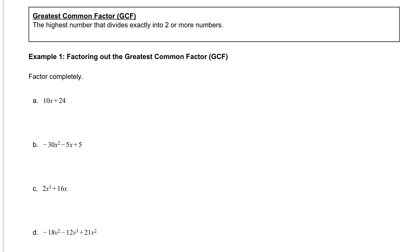In today's notes we're going to look at the start of factoring, and what we're going to start with is factoring a greatest common factor. A greatest common factor is the highest number that divides exactly into two or more numbers. So what we're going to do here is we're just going to be looking for what we call the greatest common factor.